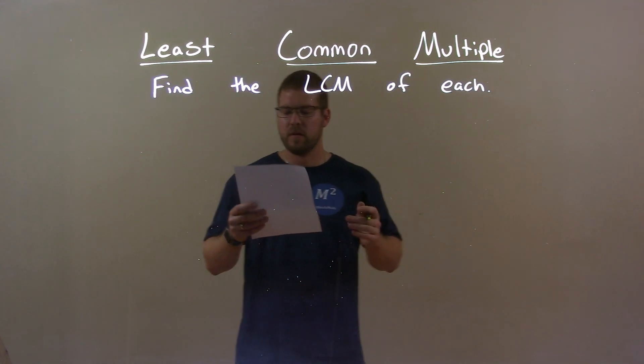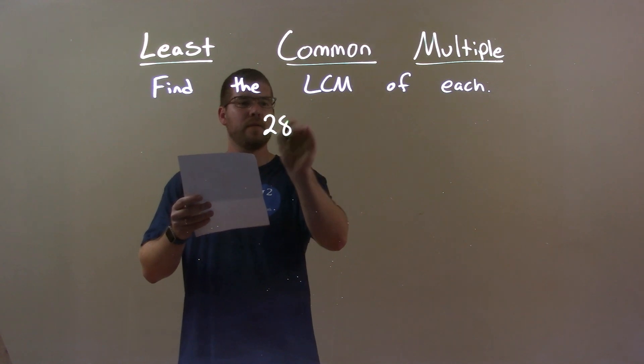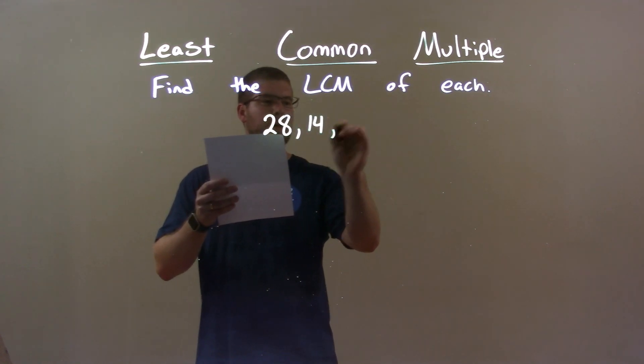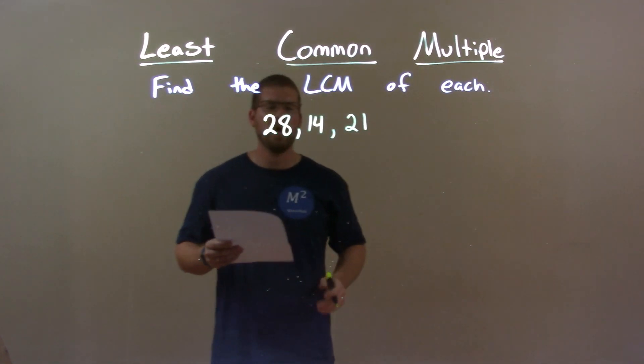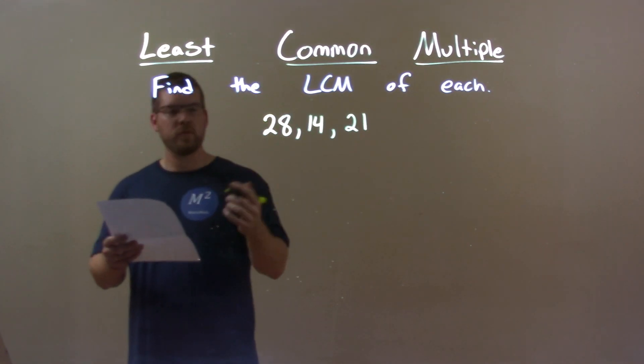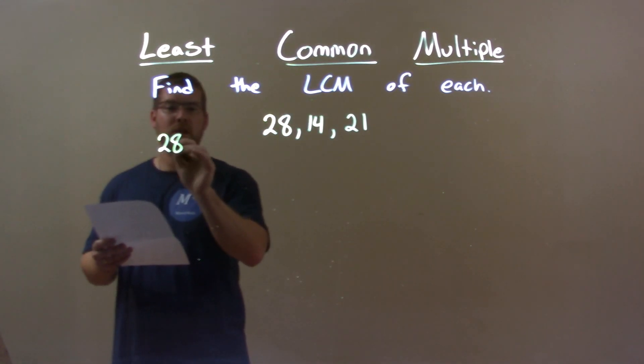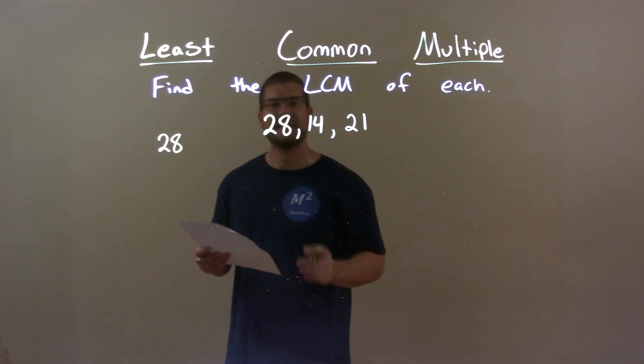So, if I was given these numbers, 28, 14, and 21, I take the largest of these numbers, 28, and I go through its multiples to find the first one that's divisible by 14 and 21.